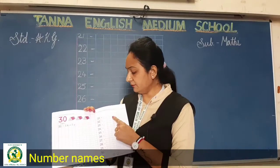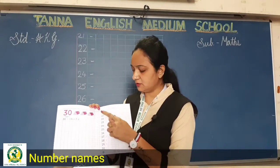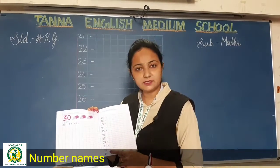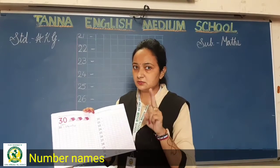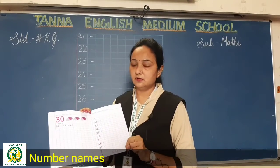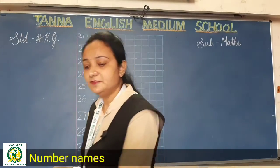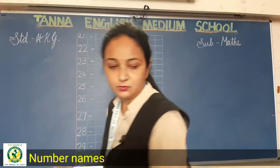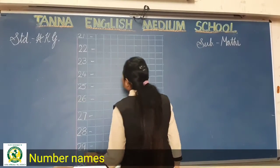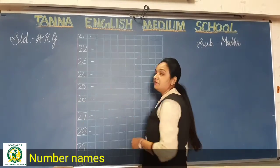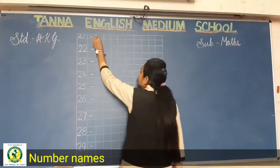After completing page number 22, you have to do page number 23. Here you have to write the number names from 21 to 30, one box per two letters. Let us start — the first one is 21.